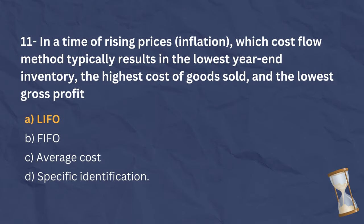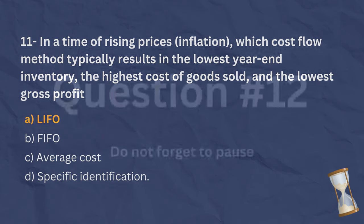The correct answer is A. Under the LIFO method, in a time of rising prices, the oldest goods are in the year-end inventory while the cost of goods sold consists of the latest goods purchased. This results in the lowest year-end inventory, the highest cost of goods sold, and the lowest gross profit.